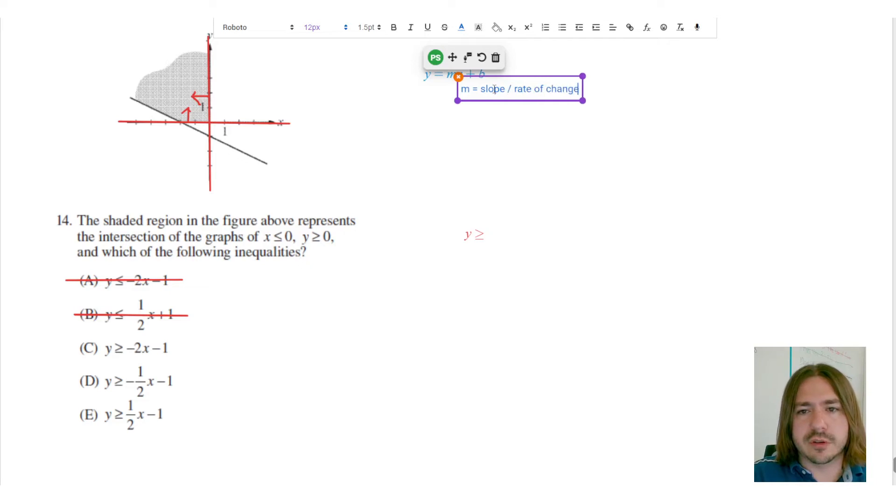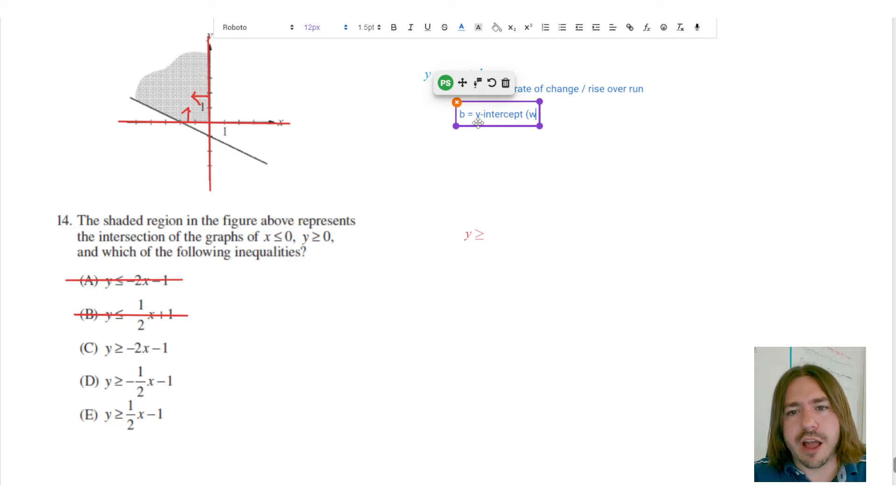You may have heard it referred to as like rise over run, and we'll kind of use that explanation to help us figure out what it is. The b value here is the y-intercept - in other words it's where the graph crosses the y-axis.